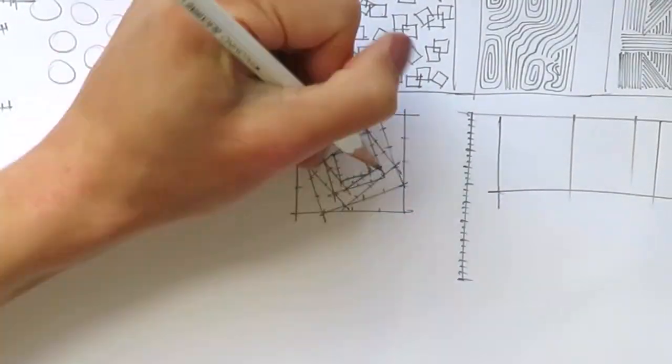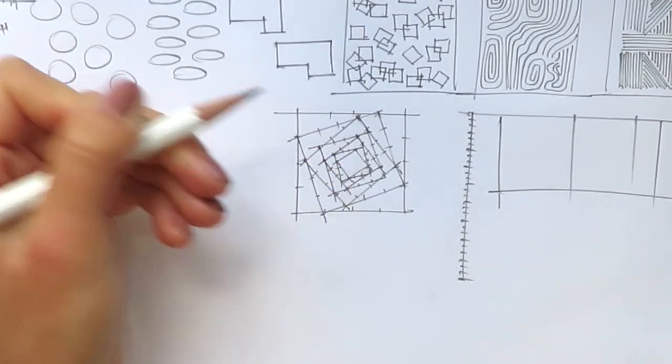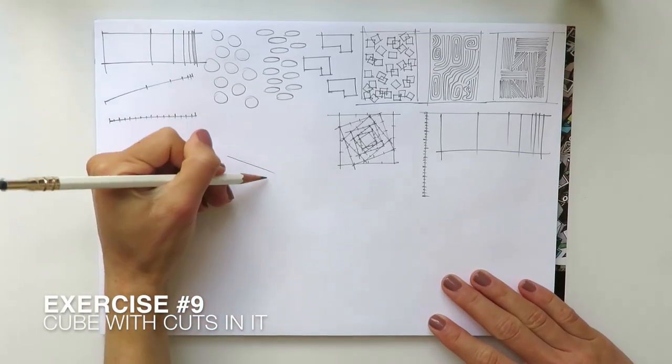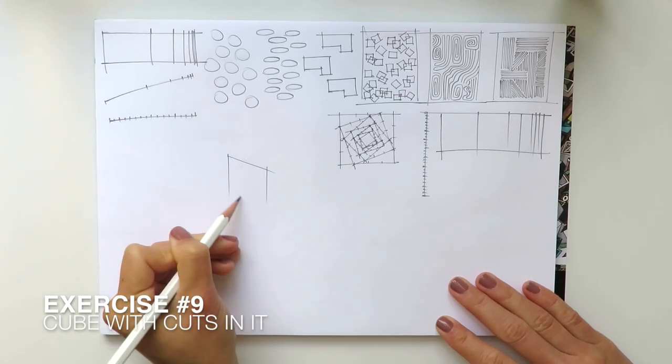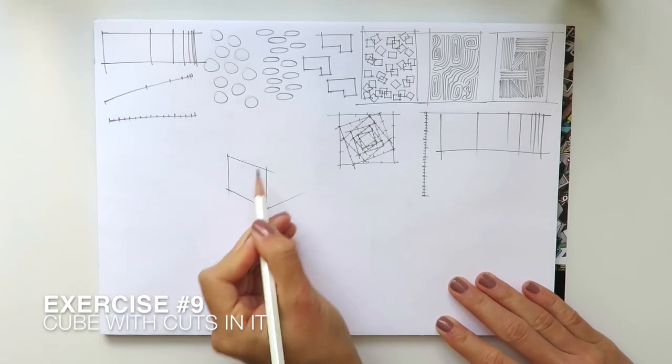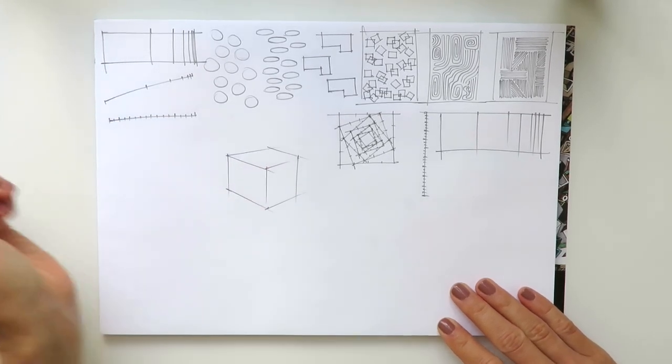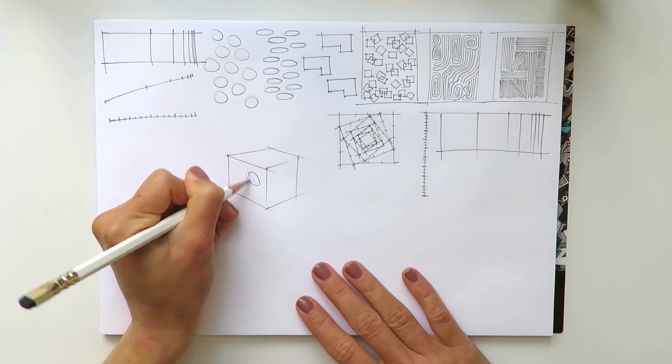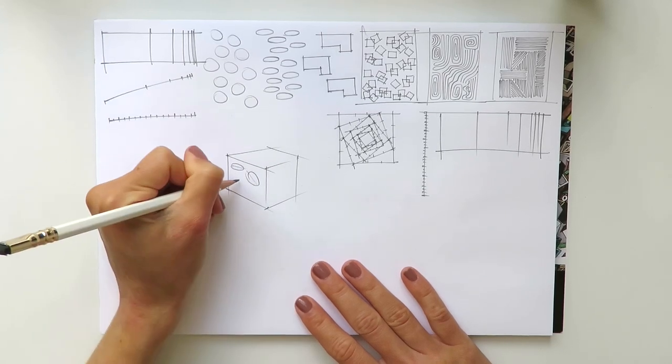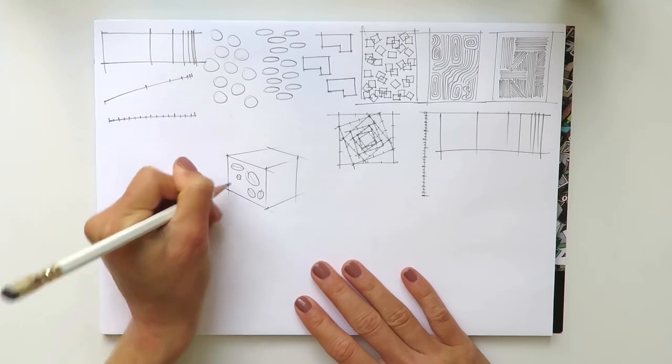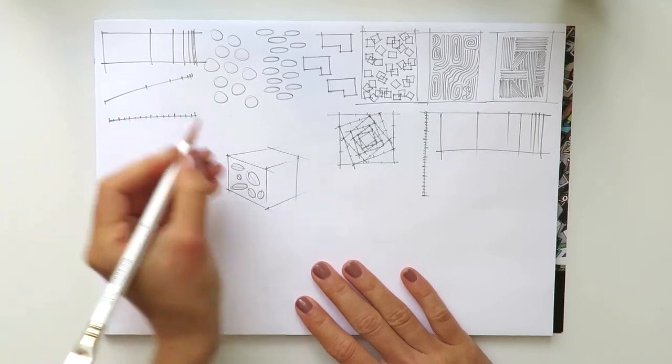All right, so exercise number nine. Very fun! So we draw a cube. We switch from the two-dimensional world with our previous exercises to three-dimensional. So we draw a cube, a cube in perspective, and we cut little ovals, little ellipses in it.